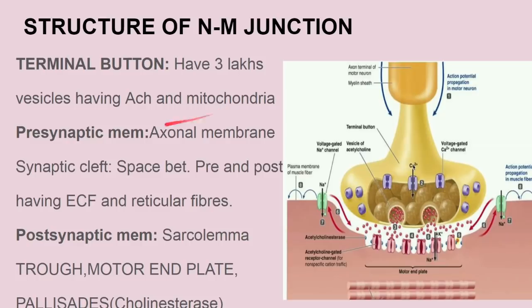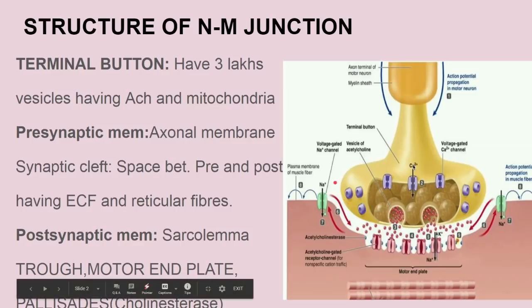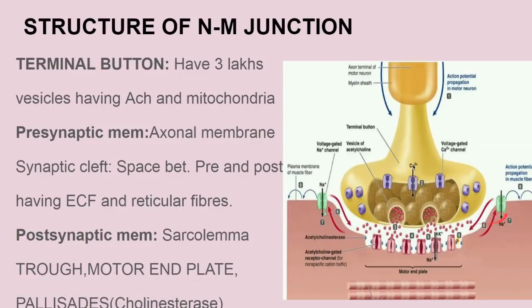Now next is the presynaptic membrane. This membrane is nothing but the nerve membrane. This is the presynaptic membrane, referred to as the axonal membrane lying in the terminal button of the nerve endings — this is the axonal membrane only.